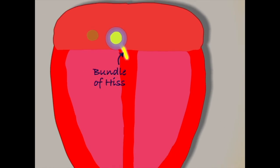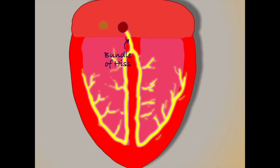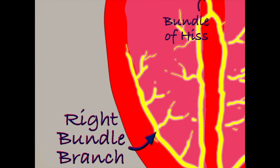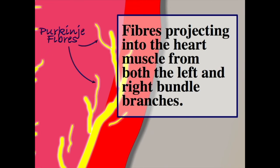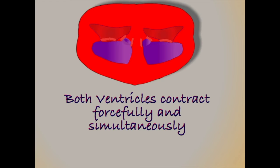The bundle of His quickly splits into the left and right bundles — the left bundle spreading down the wall of the left ventricle and the right bundle spreading down into the right. Coming from both bundle branches are fibres projecting into the cardiac muscle that cause the muscle to contract when activated. The net result is that both ventricles contract simultaneously. With the electricity used up, the heart muscle relaxes, ready to repeat the process again.